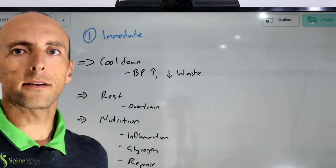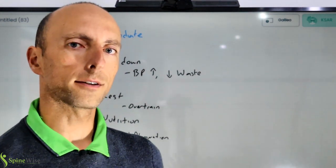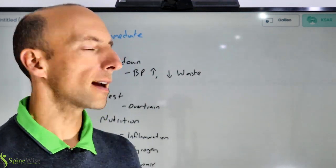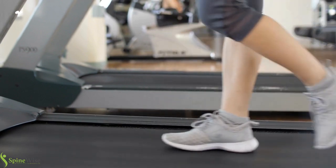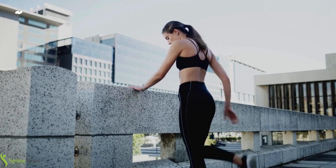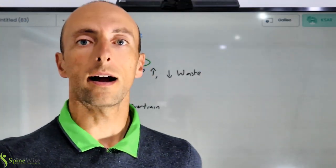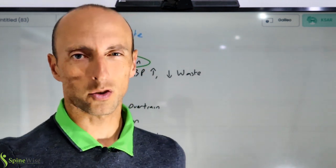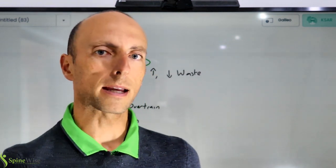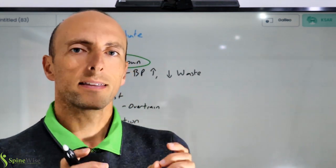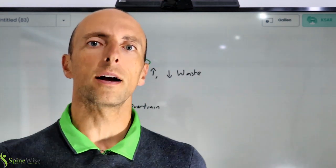Let's look at immediate recovery first. When you've just finished your main session, one of the things most people don't understand is the concept of a cool down. For most people, cool down means go for a bit of a walk, do a couple of stretches so you don't get stiff, and go home. But we need to understand the process properly. When you exercise at high intensity, capillaries open up that don't normally allow much blood flow, and muscle fibers that don't normally get much blood supply now do.